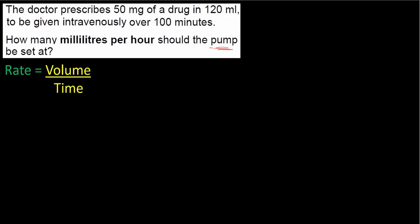The volume given is 120 millilitres and the time given is 100 minutes. The 50 milligrams was simply not used — it was a red herring. Using the formula has allowed us to avoid that tripwire and only pick out the values we need.